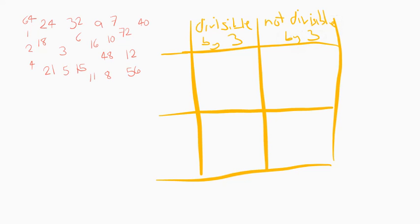On the other side, we said we were talking about 3 and 8. So this box will be divisible by 8. And then you get the idea this one will be not divisible by 8.